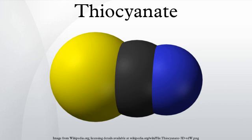Thiocyanate is the anion and the conjugate base of thiocyanic acid. Common derivatives include the colorless salts potassium thiocyanate and sodium thiocyanate. Organic compounds containing the functional group SCN are also called thiocyanates. Mercury thiocyanate was formerly used in pyrotechnics. Thiocyanate is analogous to the cyanate ion, wherein oxygen is replaced by sulfur.